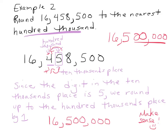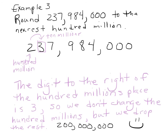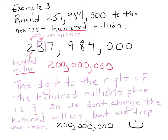Example three: round two hundred thirty-seven million nine hundred eighty-four thousand to the nearest hundred million. Here's the hundred millions place marked. We go to the number directly to the right of it — that's a three. Three is definitely less than five, so we don't change the hundred millions digit. We drop the rest and end up with just two hundred million.